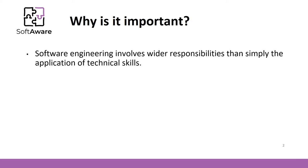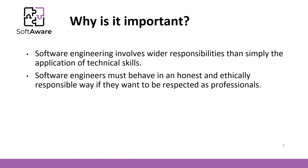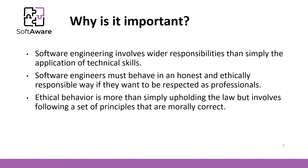Firstly, software engineering involves wider responsibilities than simply the application of technical skills. Software engineers need to behave in an honest and responsible way to be respected as professionals. The code of ethics is like a guide that software developers should know. And finally, there is a large gray area between breaking the law and morally correct behavior. The code of ethics provides a set of principles that is morally correct.